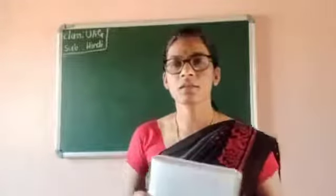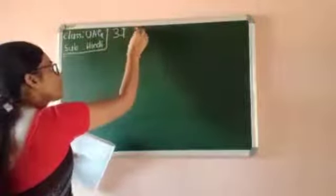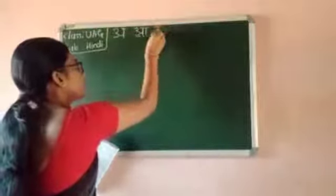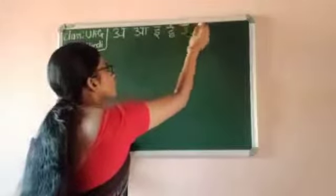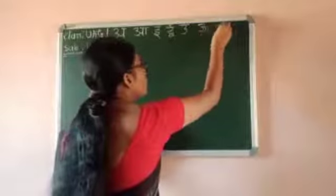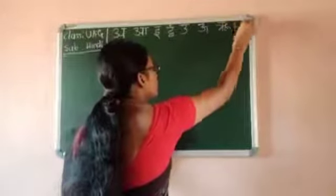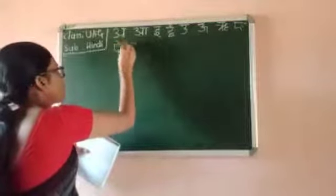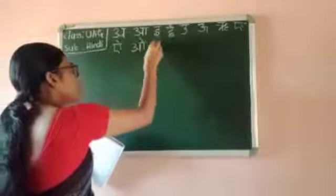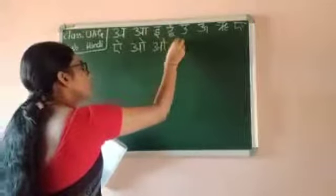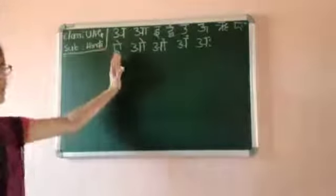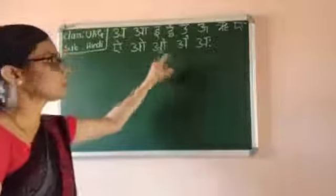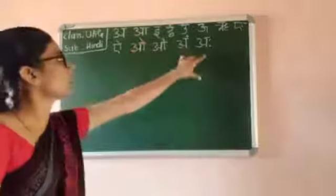What are the Swaraksara? I will write here. The Swaraksara in Hindi are: A, I, U, E, O, and others. This is the Swaraksara in Hindi — we call them Swaraksara. In English, we call them vowels. These are the vowels.